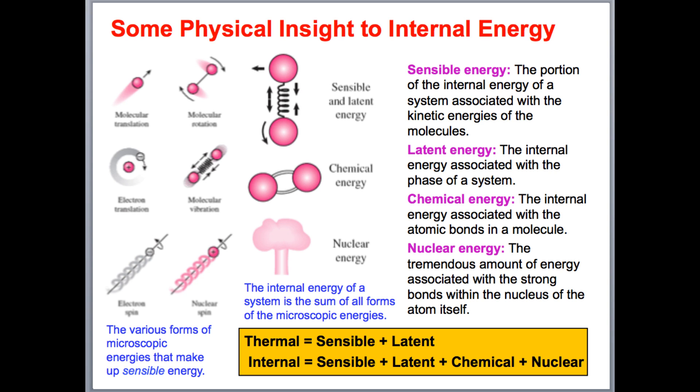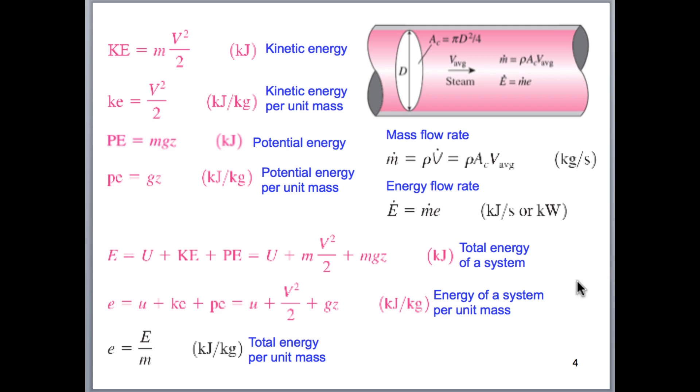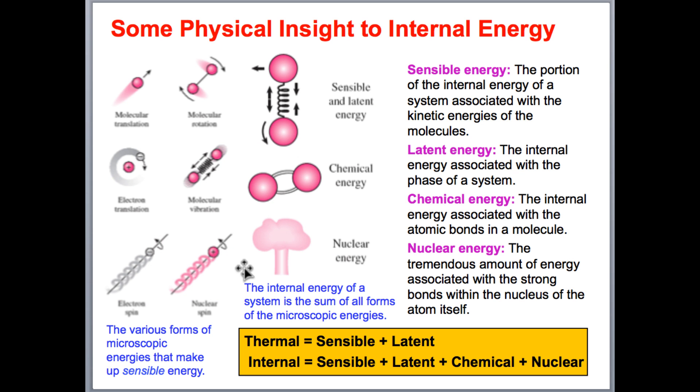So all of these are encompassed into our internal energy value that we're going to be using in our calculations. So that's the U value here in this equation. And we'll also be adding, when we look in a system, the kinetic and potential energies of that system.